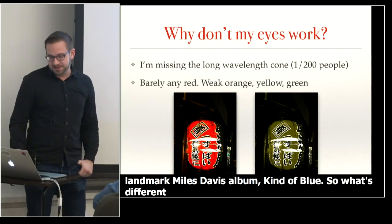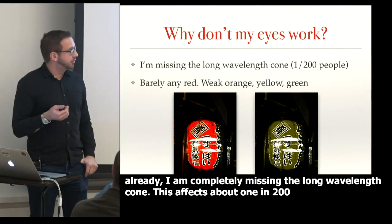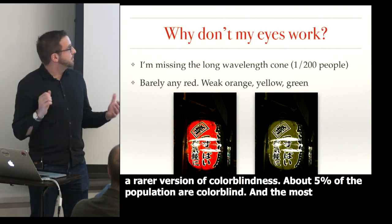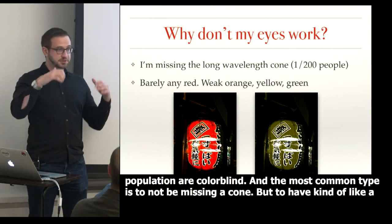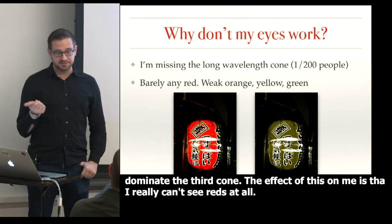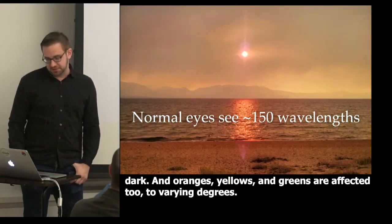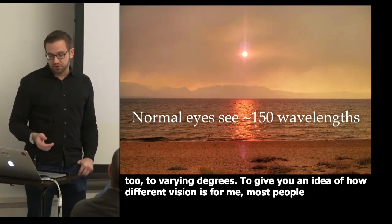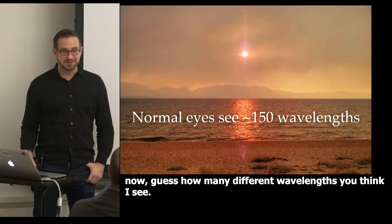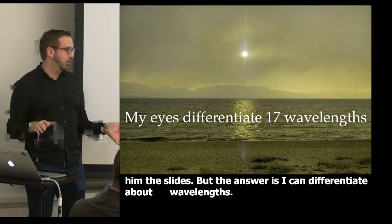So what's different about me? As I've mentioned, I am completely missing the long wavelength cone. This affects about one in two hundred people — it's a rarer version of color blindness. About five percent of the population are color blind. The most common type is not to be missing a cone, but to have a weakened version of one, so the other two dominate. The effect on me is that I really can't see reds at all — I see them as very dark. Oranges, yellows, and greens are also affected to varying degrees. Most people can see about 150 different wavelengths; I can differentiate about 17.